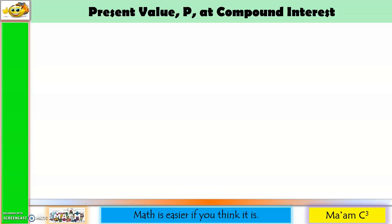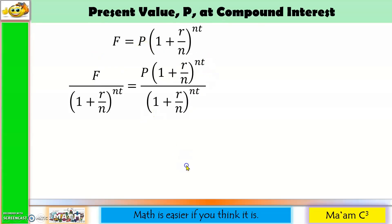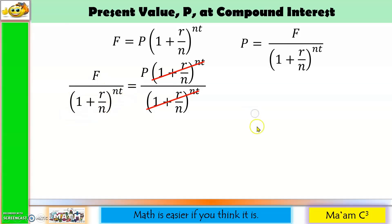Now let us talk about the present value P at compound interest. Recalling the formula for F, we can derive the formula for P by dividing both sides by the quantity (1 + R/N)^(Nt). This gives us P equal to F divided by the quantity (1 + R/N) raised to Nt. Moving this expression, the exponent becomes negative.